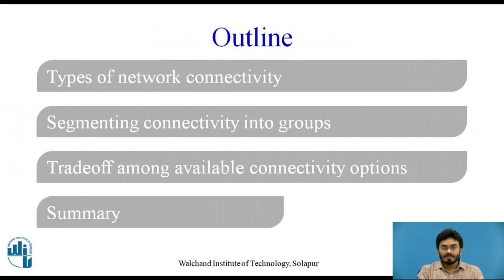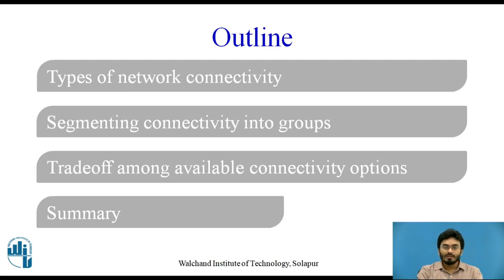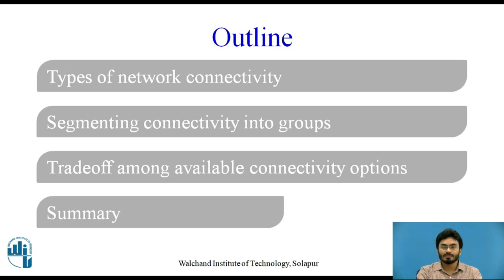These are the things we'll be covering in our video. First, I'll take you through an example where we discuss the basic needs and why it is very important to understand the network capabilities and the types of options currently available in the market for Internet of Things. Then we'll discuss types of network connectivity, segment the given options into certain groups within the scope of this video, and finally set up a balance depending upon an IoT application.